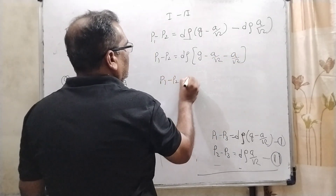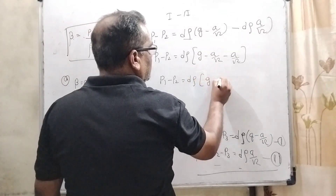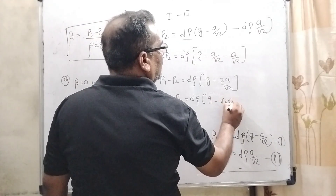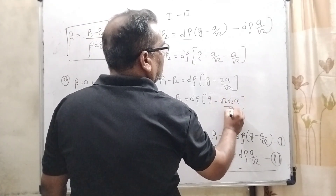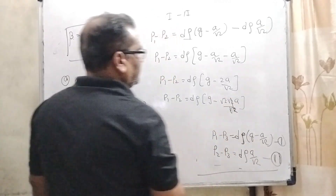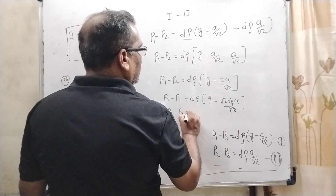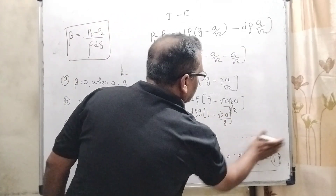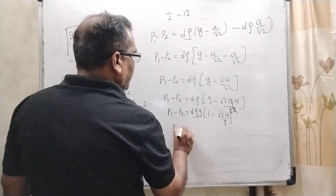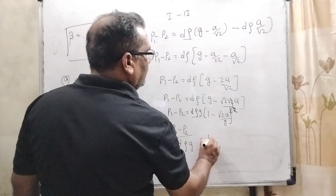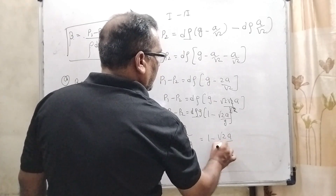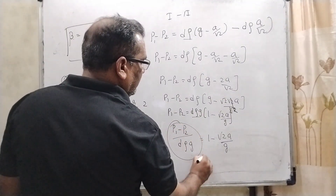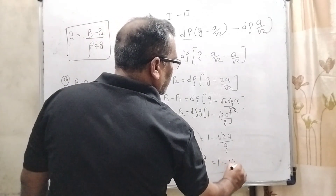Simplifying: P1 minus P2 equals D·rho·G·(1 minus root 2·a by g). Transposing D·rho·g to the left side: (P1 minus P2) upon (rho·d·g) equals 1 minus root 2·a by g. Since in the question beta is defined as P1 minus P2 upon rho·d·g, we get beta equals 1 minus root 2·a by g.